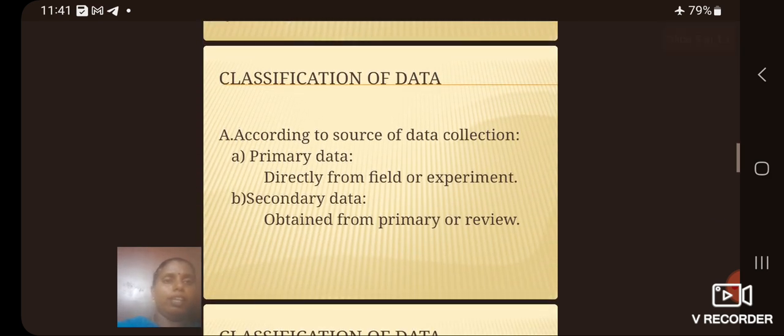Then we see the classification of data. According to source of data collection, it can be divided into primary data and secondary data. Primary data directly from field or experiment. Secondary data obtained from primary or review.